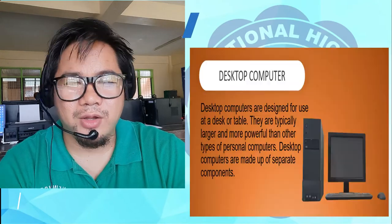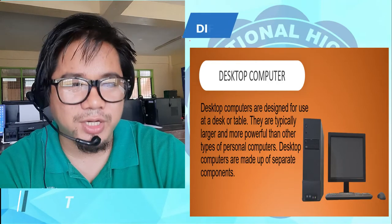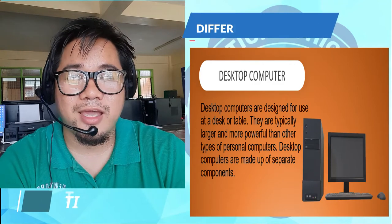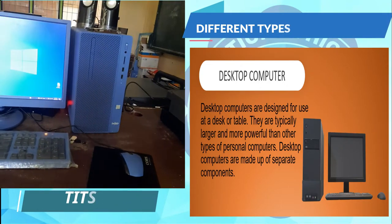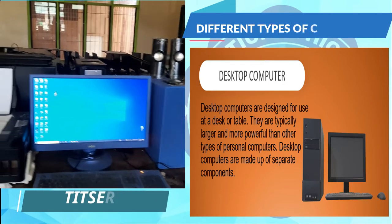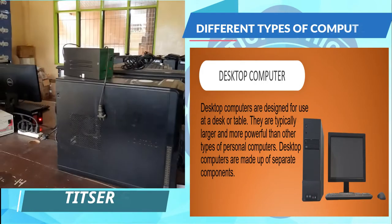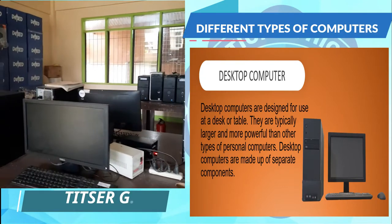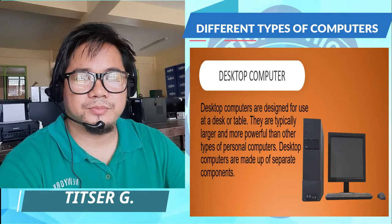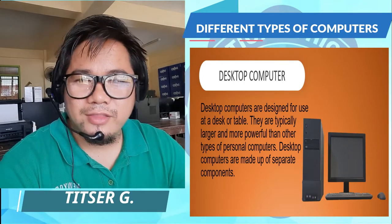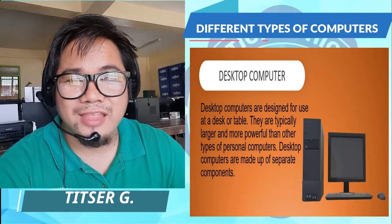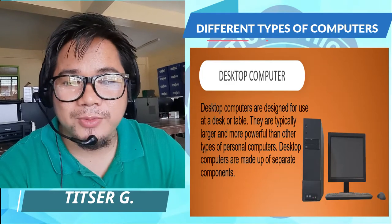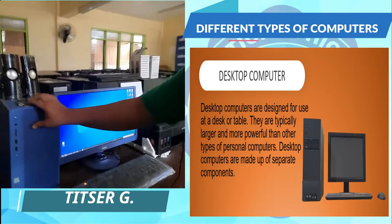So what are the different types of computers? Let us start first with desktop computers. These are computers designed to be used on top of a desk or table. Like this one — this is a desktop computer. These are all desktop computers. It has a larger box; it is quite bigger compared to other computers. Desktop computers are made up of separate components. The main component is the system unit, which is like a rectangular box.